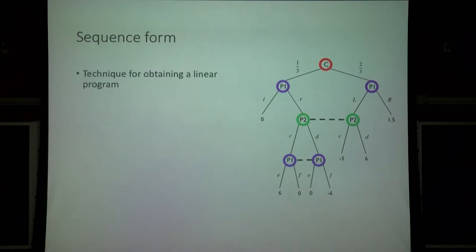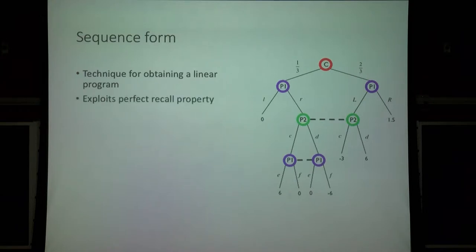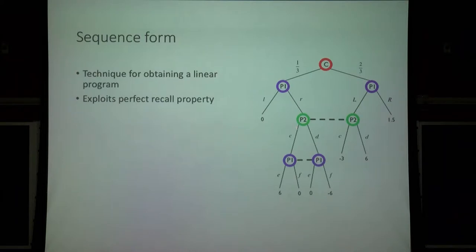The sequence form is how we formulate our optimization problem. It's a technique for obtaining a linear program representation of the Nash equilibrium problem, and it exploits the perfect recall property. Perfect recall means that for any given information set, the player always knows which last action they themselves took to reach that information set. For example, in this game, player one knows that if they're in a particular information set, even though they don't know which node they're at, they know the last action they took. Without perfect recall, the sequence form does not work.